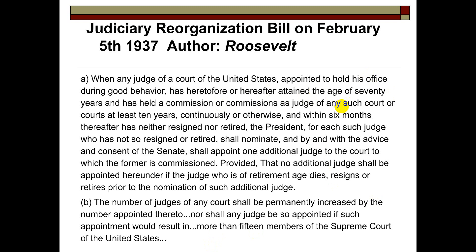There's nothing in the Constitution that limits judges to nine — that's Congress's ability. But there is something powerful about legal precedent. When people start seeing this idea of court packing, there's a question of whether you're changing the Constitution or getting rid of checks and balances. Permanently increasing the court means we now have 15, but the law leaves it open so that we could eventually have 25, 30, or 40. Roosevelt is going directly after the court and firing back based on the way the court has taken on the New Deal.